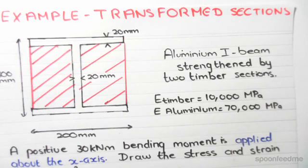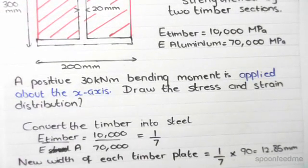First, we have to convert the timber into aluminum. We divide the elastic modulus of timber by the one of aluminum. So we do 10,000 divided by 70,000, which gives us 1 over 7.